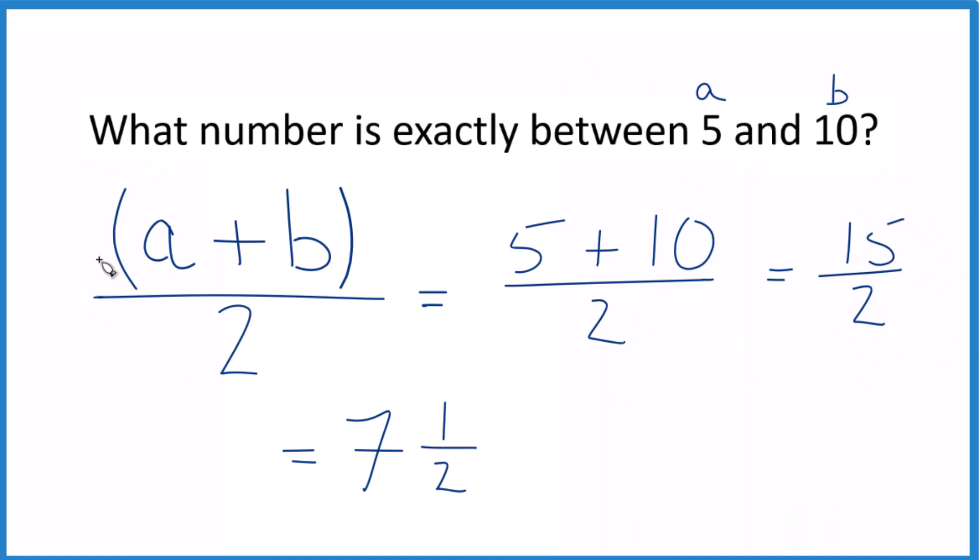This method is nice because you can use any numbers. You just add them together, divide by 2. You're taking the average, and you find out what number is exactly between them. This is Dr. B, and thanks for watching.